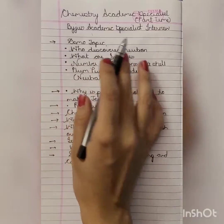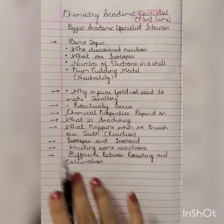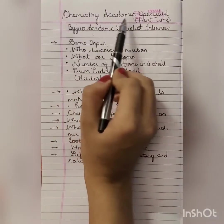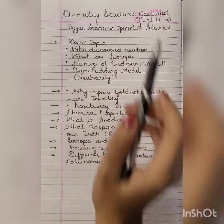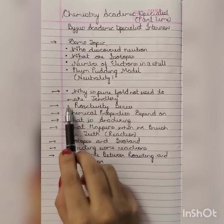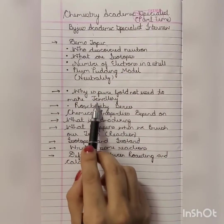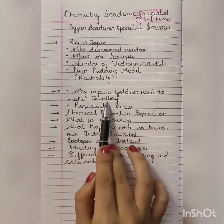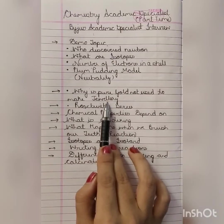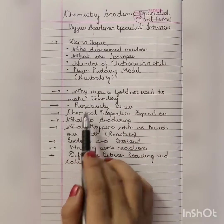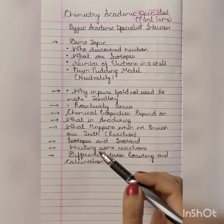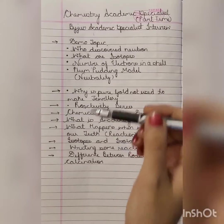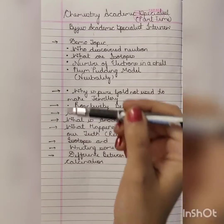After that, all the questions were from chemistry only, since my post was Academic Specialist Chemistry. He asked why pure gold is not used to make jewelry. Then he asked about the reactivity series — what it is, which metals are in it, and how they are arranged.